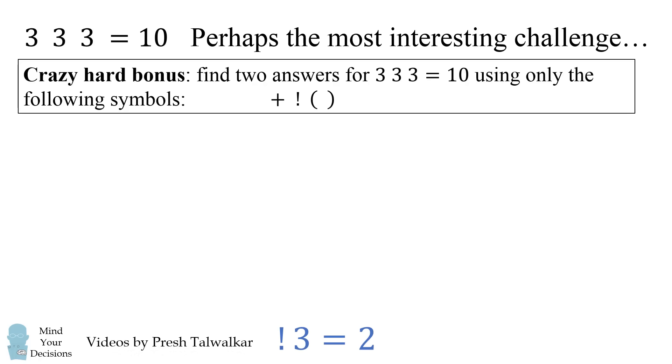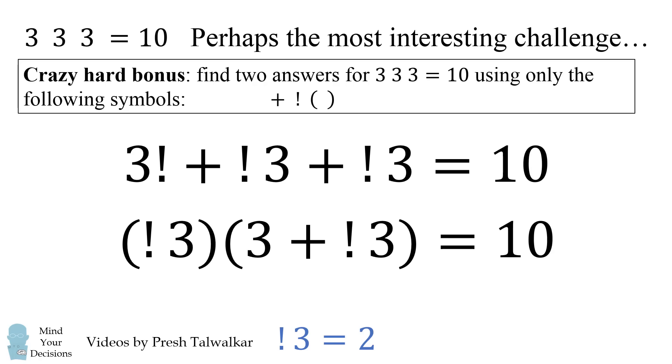So, how does 3 sub factorial equal to 2 help us solve this problem? Well, one way we can get to 10 is 3 factorial plus 3 sub factorial plus 3 sub factorial. We have 6 plus 2 plus 2 and that gets to 10. Another way to solve this is 3 sub factorial multiplied by the quantity 3 plus 3 sub factorial. We have 2 multiplied by 3 plus 2 so we have 2 multiplied by 5 and that also equals 10. So this is how you solve the bonus question of getting to 10 using only the symbols plus, exclamation point, in parentheses.